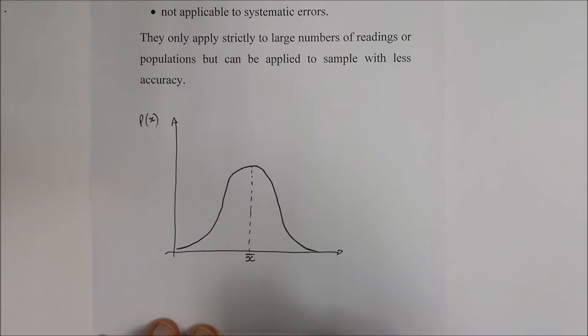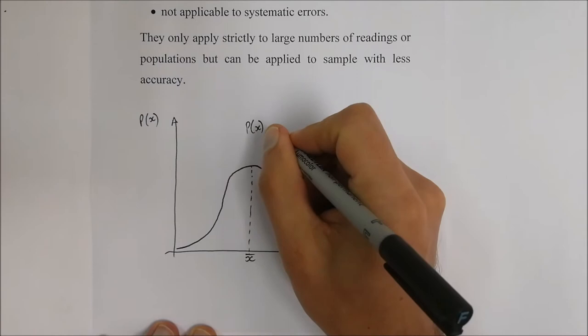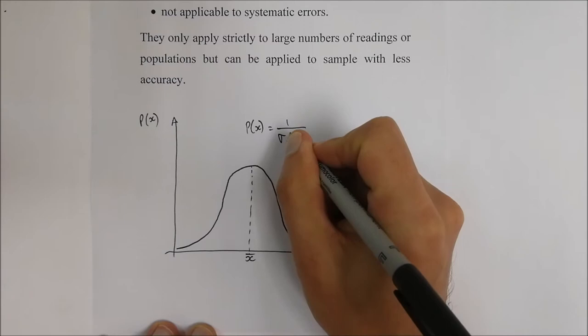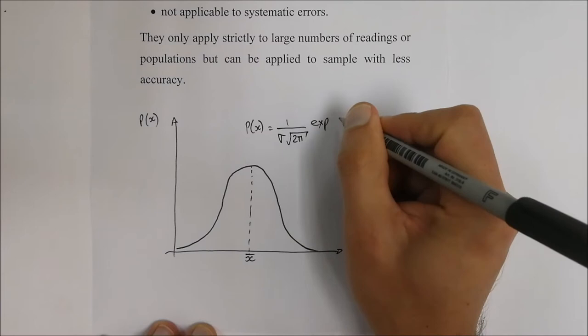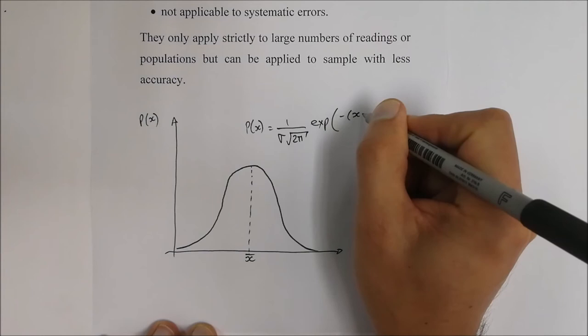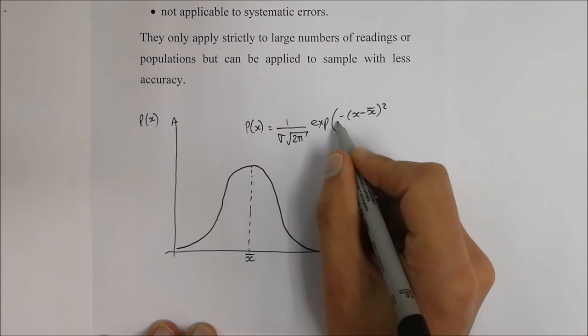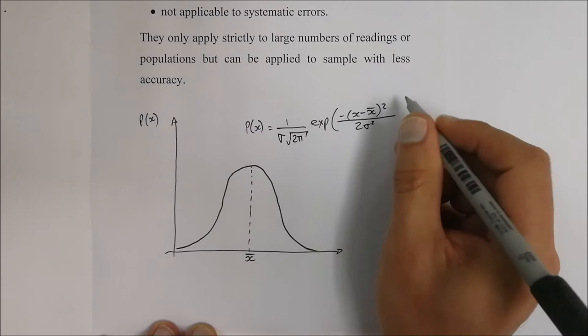This curve has an equation: p(x) equals 1 over the standard deviation multiplied by the square root of 2π, times the exponent of negative (x minus x̄) squared, all over 2 times the standard deviation squared.